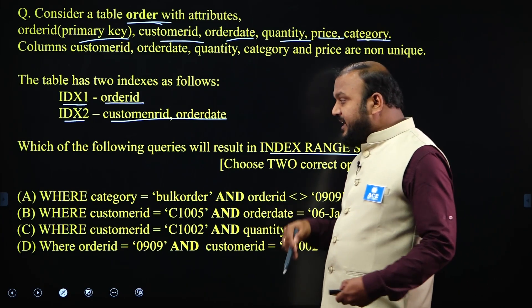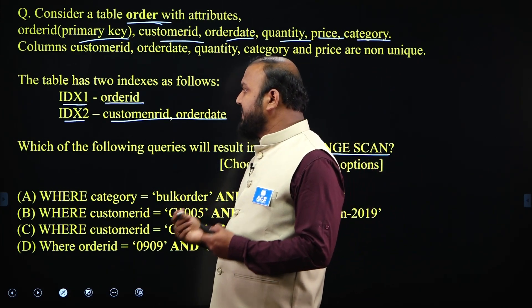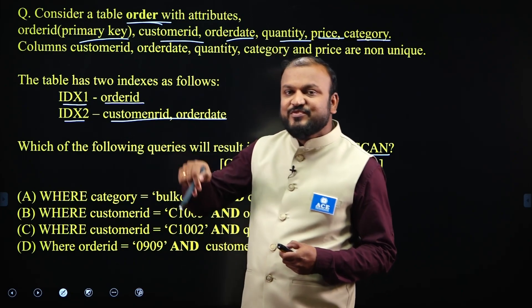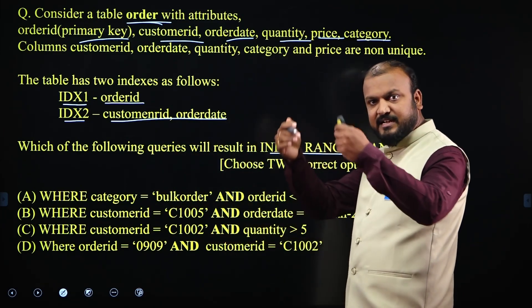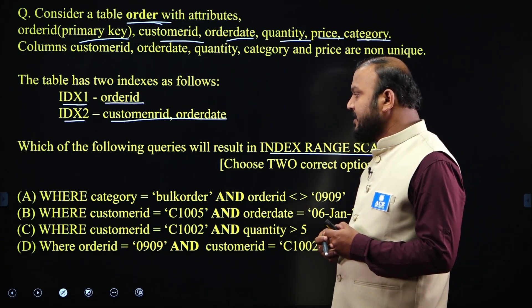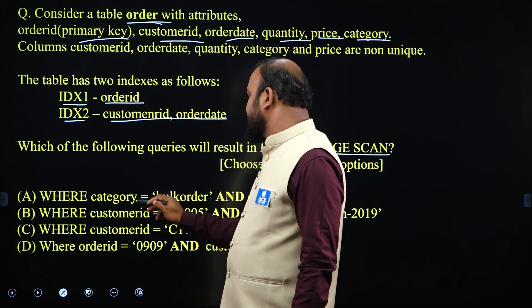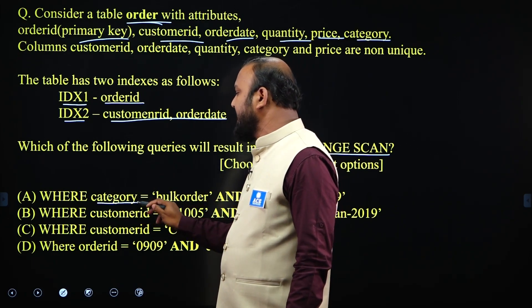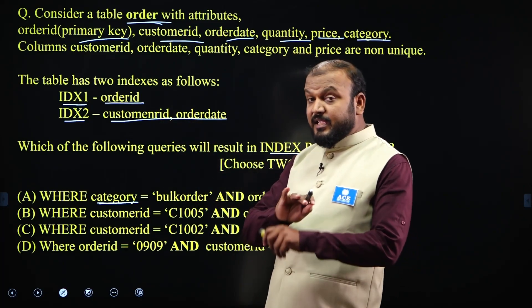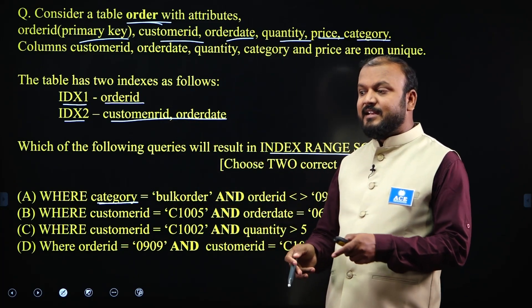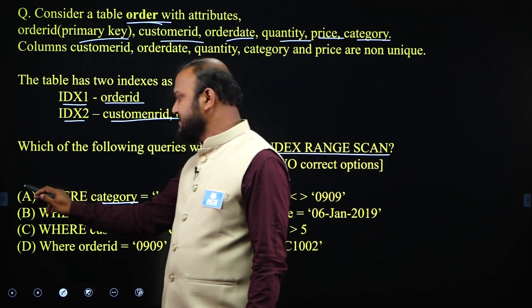Queries that search tuples based on attributes on which we have an index require an index scan; otherwise, they require a table scan. Look at option A: category equals 'bulk order' — do we have an index on category? No. Because we do not have an index on category, it requires scanning the table, not the index. So A is incorrect.